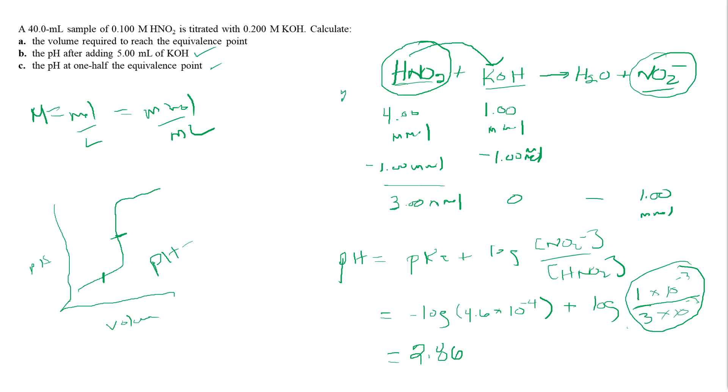Alright, so all we have to do is take negative log of the Ka, negative log of 4.6 exponential negative 4, close the parenthesis, and we get 3.34. So the pH at half the way to the equivalence point is 3.34. Alright, so that concludes this problem.